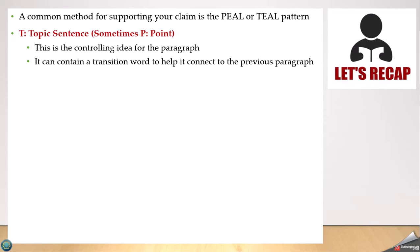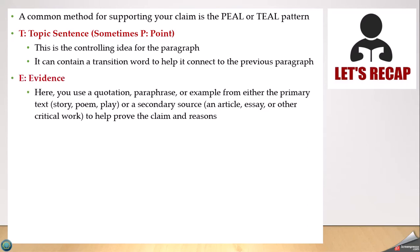A common mistake new writers make is having an announcement like 'this paragraph is going to be about imagery' or 'this paragraph is going to be about symbolism.' You don't want to have an announcement like that. Evidence is really what we're going to focus on in this lecture — how to use a quotation, paraphrase, or example from either the primary source, which is the poem, story, or play, or a secondary source such as an article, essay, or critical work.